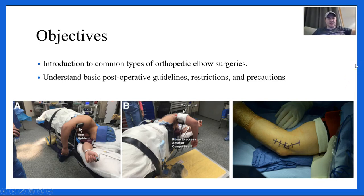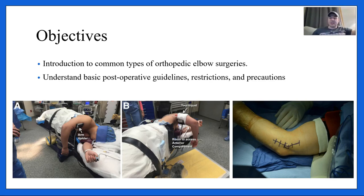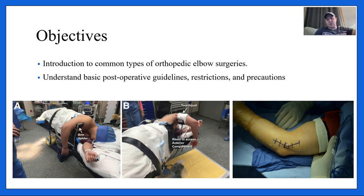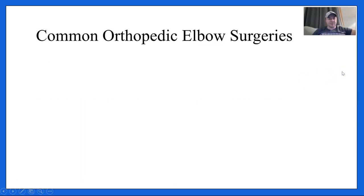Objectives: introduction to common types of orthopedic elbow surgeries, and understanding basic postoperative guidelines, restrictions, and precautions. Looking at the pictures here, there are two different body positions for the elbow: the lateral decubitus position (labeled A and B, bottom left) and the standard medial elbow prep where the patient lies on the table with their arm stabilized at the distal end, giving access to the inner elbow for things like Tommy John surgery or ulnar nerve transposition.